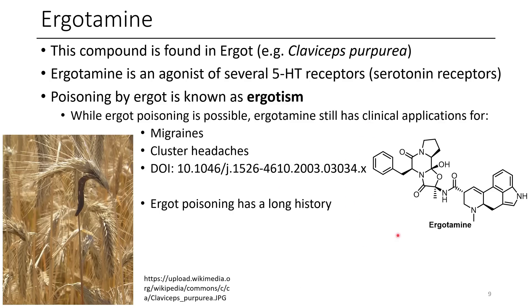Looking at ergotamine's structure, we can see it has an indole and an ergoline core, as well as an interesting amide linkage — almost like an orthoester, except it has both a nitrogen and a free hydroxy group, as well as several amide groups. Quite an interesting motif.